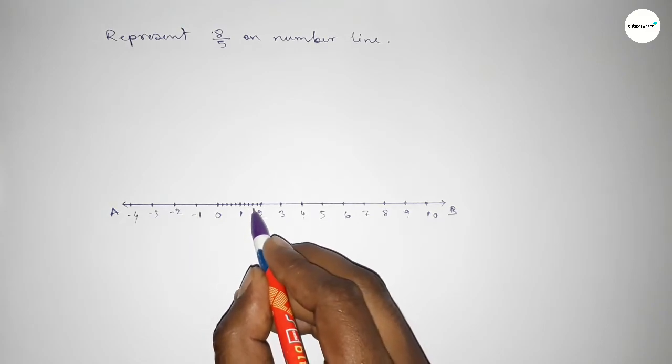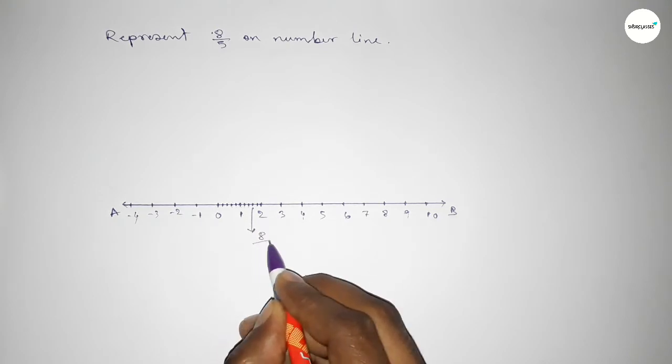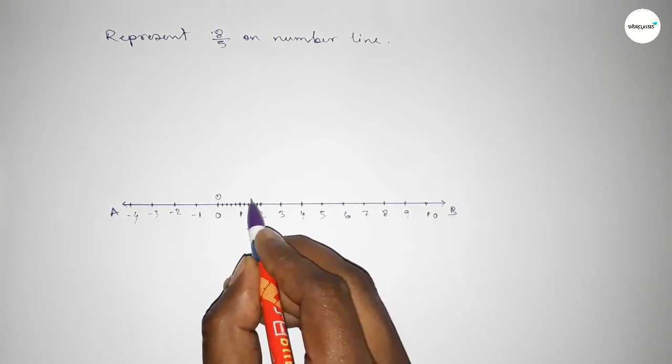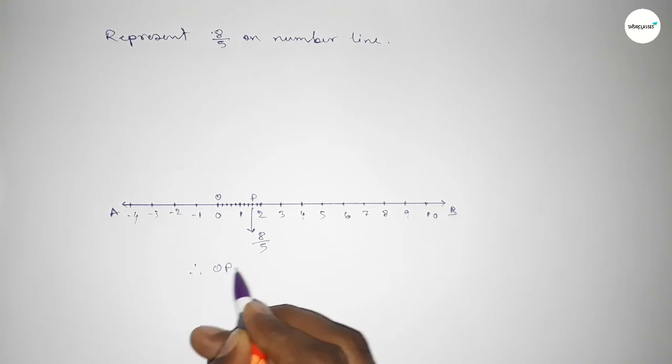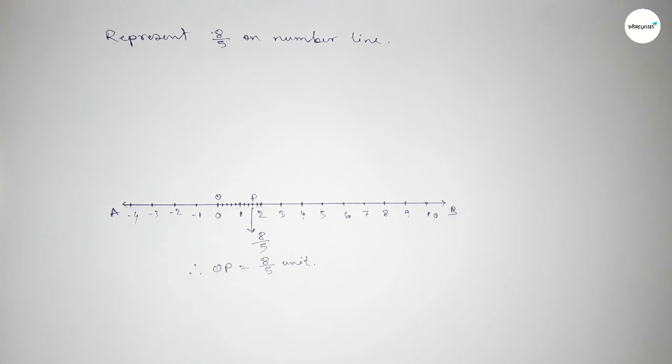Taking here O and P, therefore OP equals 8 over 5 units. That's all, thanks for watching. If this video is helpful to you, then please share it.